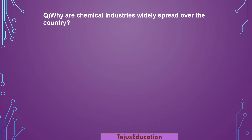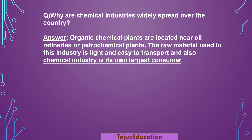This particular question is very important: Why are chemical industries widely spread over the country? Usually industries are located near areas where raw material is easily available, but in this case the raw material is lighter and can be transported wherever required. Organic chemical plants are located near oil refineries or petrochemical plants. The raw material used in this industry is light and easy to transport, and also the chemical industry is its own largest consumer.